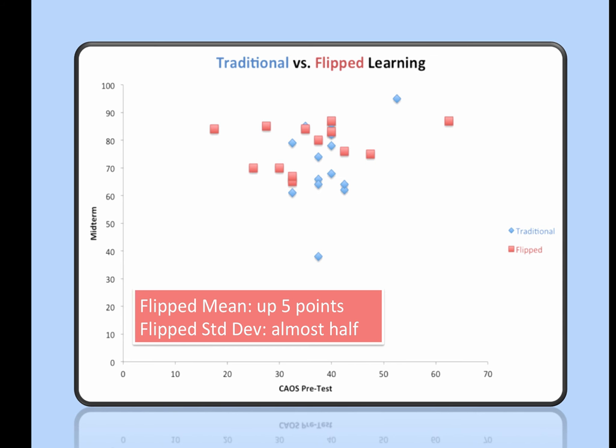You might not be able to tell, but the traditional students scored a little bit better on the pre-test than the flipped students did. But then the flipped students scored five points higher on average on the midterm exam.